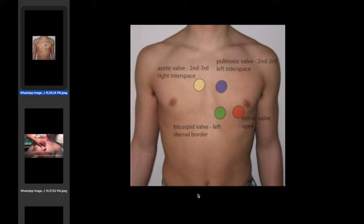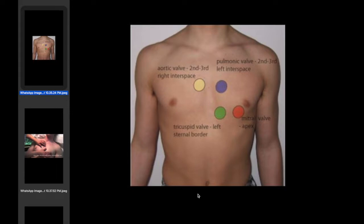We look for any scars, for example previous sternotomy or pacemaker, any evidence of clubbing, splinter hemorrhage, or nicotine staining. We then examine the radial pulse to detect the rate, rhythm, and volume. This can be examined in 15 seconds multiplied by 4 to detect the rate in beats per minute. We examine the collapsing pulse, and bilateral radial examination is needed.